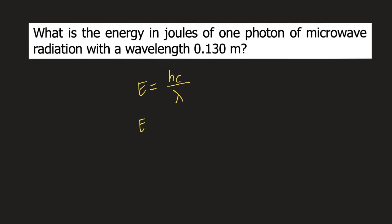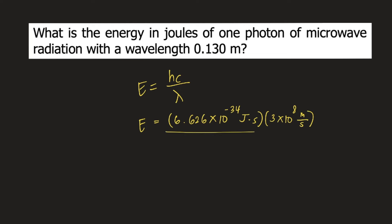E is energy and the unit is joules. H is Planck's constant, and the value of Planck's constant is 6.626 times 10 raised to negative 34 joule-seconds. C is the speed of light and its value is 3 times 10 raised to 8 meters per second. Divided by lambda, the wavelength in meters, which is 0.130 meters.